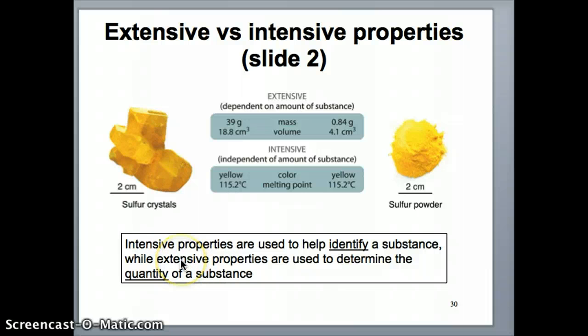An extensive property, on the other hand, is used more to determine how much of a material you have. If the volume is bigger, you know there should be more mass in your sample.